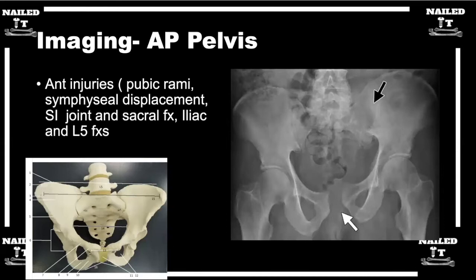What do you look for on an AP pelvis in patients you're concerned may have a pelvic ring injury? The natural thing that all of our eyes go to is looking at asymmetry. If you look at the image on the right side, you can see that the left hemipelvis of this patient is dramatically different than the right side. Your eyes are always drawn to the most obviously different thing, whether that be fracture or ligamentous disruption, as is in this case.